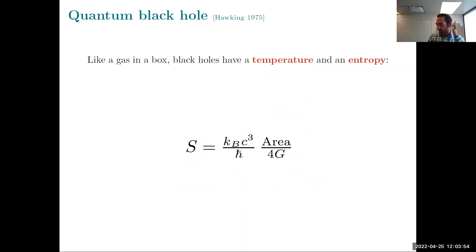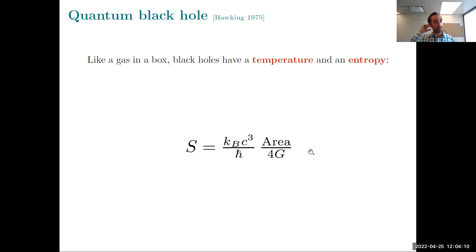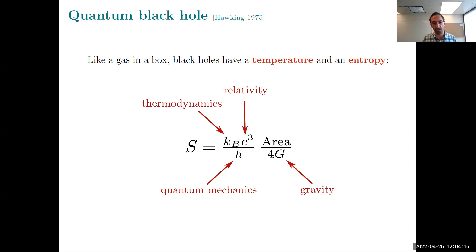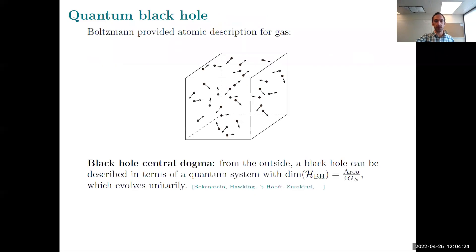One of the reasons we're so fascinated by this object is of course the black hole entropy formula. Similar to a gas in a box, black holes have a temperature and an entropy. I've written the entropy formula with all the fundamental constants put in, and the important thing is that it scales with the area of the event horizon. It's fascinating because it combines fundamental constants from different branches of physics.